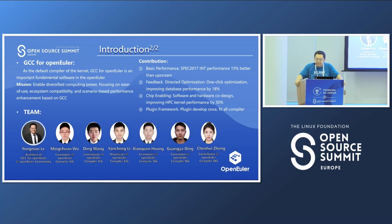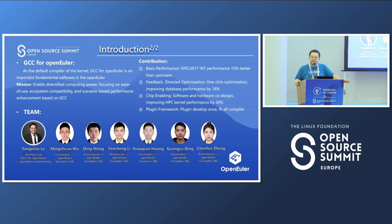Then we would go to the GCC compiler. As we have multiple groups inside the compiler special interest group, there are many teams working for different compilers. Some guys advocate LLVM and some guys promote the value of GCC. For GCC, it is the fundamental compiler used by OpenOla, which is the default compiler to generate the binary and image for the whole community.